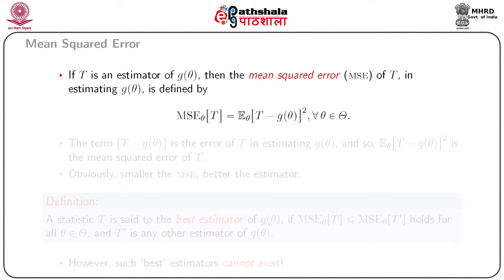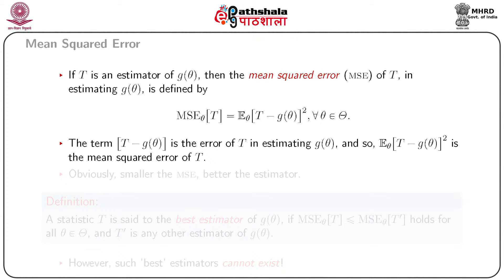From the above result it is clear that the closeness of an estimator T can be measured by the quantity E_θ[(T − g(θ))²] for all θ ∈ Θ. It is called the Mean Squared Error (MSE) of the estimator T. Thus the MSE of an estimator T for estimating g(θ) is defined by MSE_θ(T) = E_θ[(T − g(θ))²] for all θ ∈ Θ. The term (T − g(θ)) is called the error of T in estimating g(θ), and the MSE measures the average squared difference between the estimator T and the parameter g(θ).